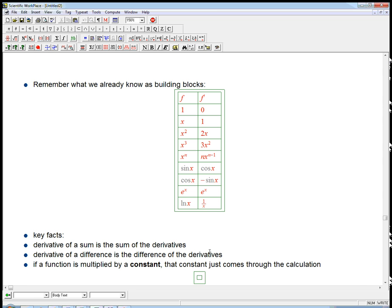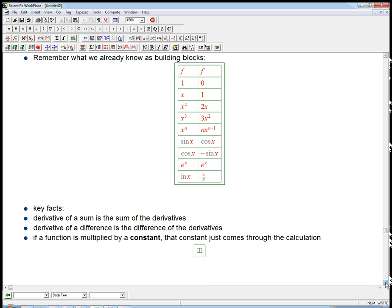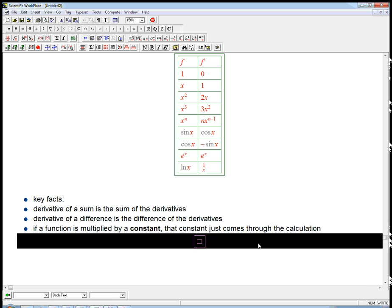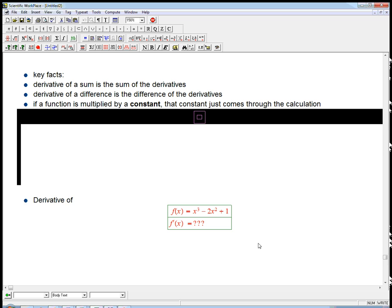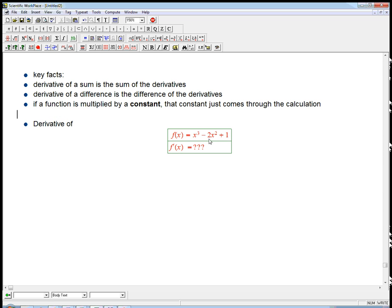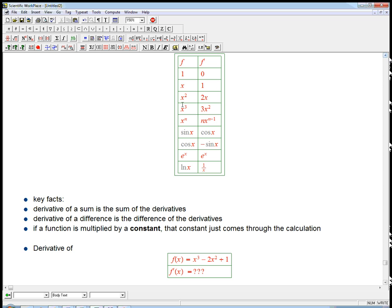Those are very useful facts combined with these building blocks. Here's how that works to calculate the derivative that we want. How would we use that to get the derivative of this guy? The derivative of x cubed we already knew was 3x squared, so we're just going to take the derivative of that guy separately. We're going to take the derivative of x squared which was 2x. And I'm going to take the derivative of a constant, which is 0.